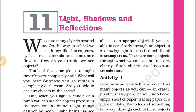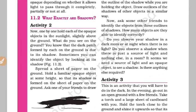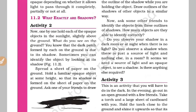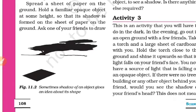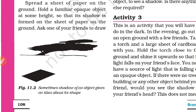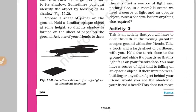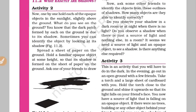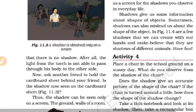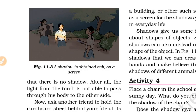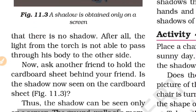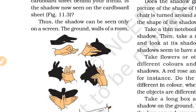Shadows are produced when light travels in a straight line and hits an opaque object. That is the main point: light travels in a straight line. The opaque object blocks the light, and a shadow is formed on the screen. The outer shape of the object determines the shadow shape.